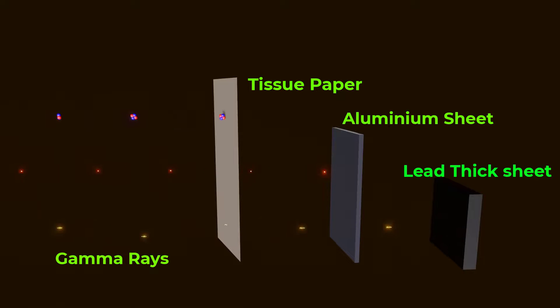Gamma rays are the most penetrating of the three types of radiation and can travel long distances in air and through matter.